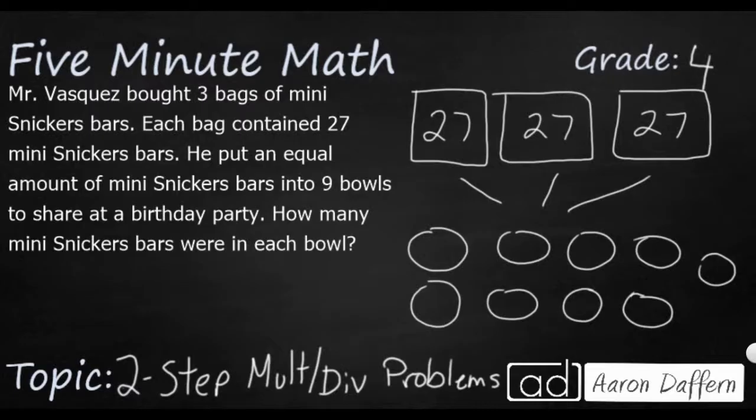Well, first I've got to figure out how many mini Snickers bars I have. So I've got three bags of twenty-seven. So I'm just going to do a little multiplication here. And that's going to be twenty-one, that's going to be six, eight. So I've got a total of eighty-one mini Snickers bars. So I'm going to put that right here. Eighty-one mini Snickers bars. And I need to split that into how many bowls do I have? Eighty-one divided by nine.